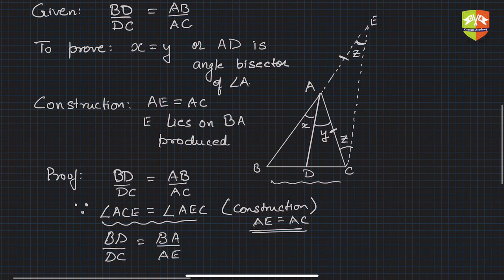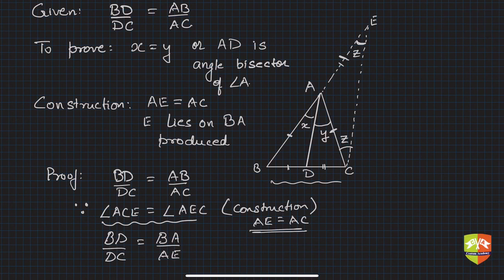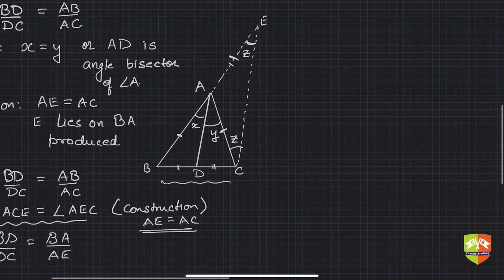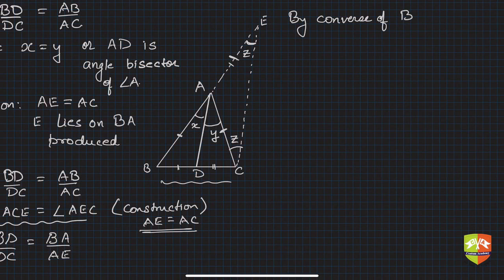So BD by DC equals BA by AE — this side by that side equals this side by that side. This means, by the converse of BPT, if the ratios are the same, then we can say that AD is parallel to CE.